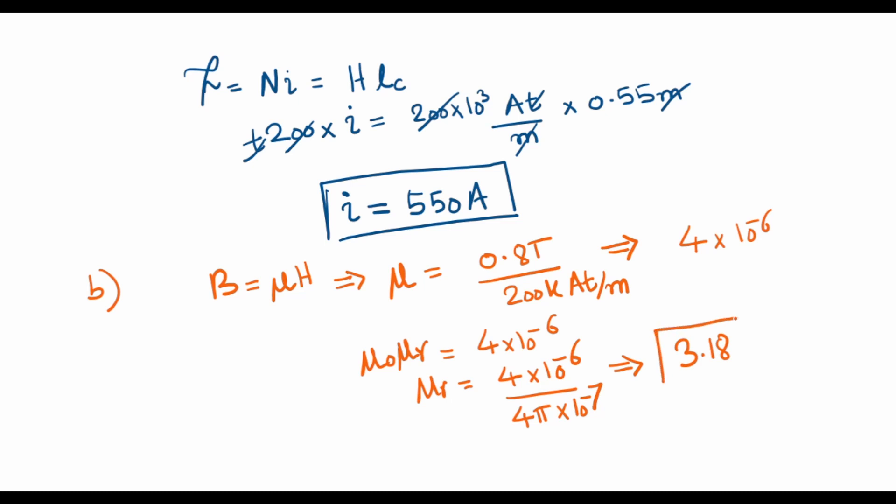So it comes out to be an inefficient magnetic material, not so conducive for producing magnetic flux, as it has a permeability of only 3.18 times the permeability of air.